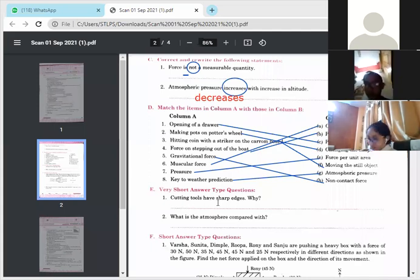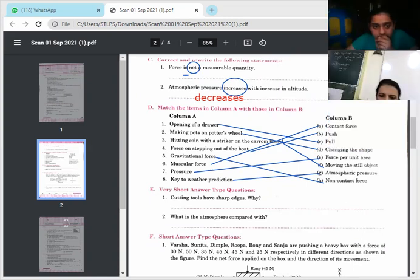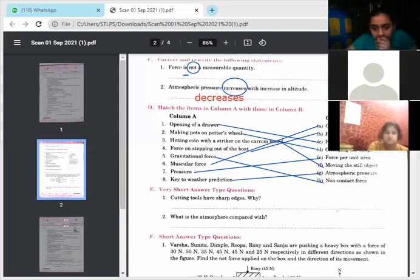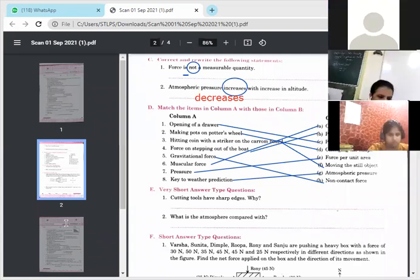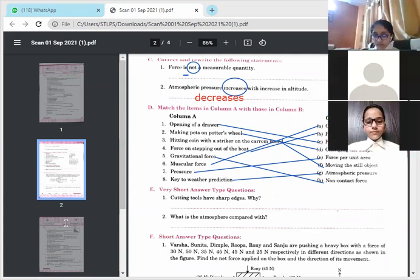Okay. Very short answer type questions. Cutting tools have sharp edges. Why it is so? Why cutting tool has sharp edges? What's the reason behind it? Already we have done. Yes, Neha Jain. Neha Jain, Aaraf Segal, Simarjit. The cutting edges of tools like blade, knife, etc., are provided with sharp edges to cut the thing easily as the sharp edges have small area on which the force is applied, hence more pressure is applied. Okay. So sharp edges have less area and you know less area has more pressure and it's easy to cut things with sharp edges.